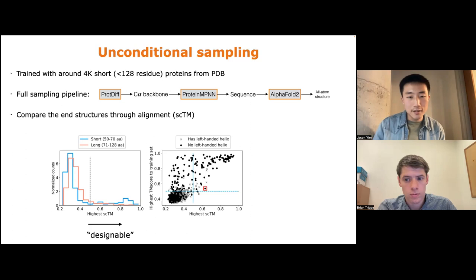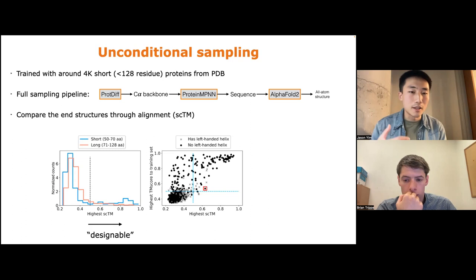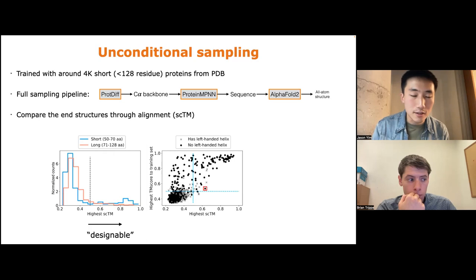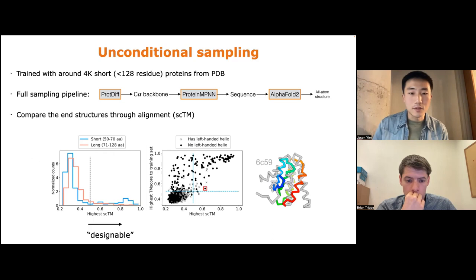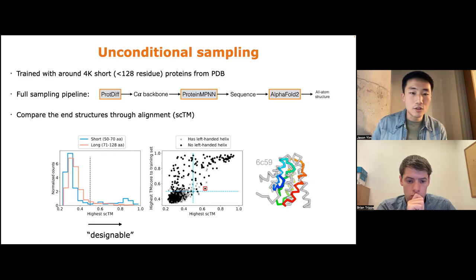Analyzing designable samples: a scatter plot with SCTM on the x-axis and TM score to the training set on the y-axis shows a correlation — high SCTM samples often match something in PDB. More interesting are samples in the top-right of the designable region but not closely related to PDB structures. One such sample, closest to PDB entry 6C59, shows many differences from the closest PDB match, demonstrating the ability of diffusion models to generate novel protein designs beyond what's in PDB.